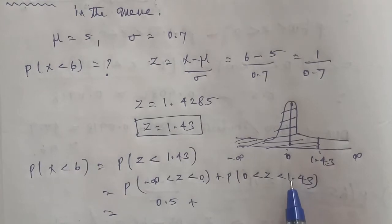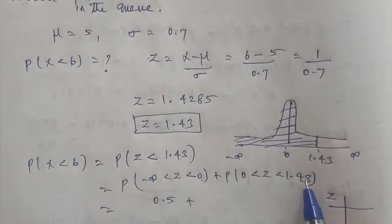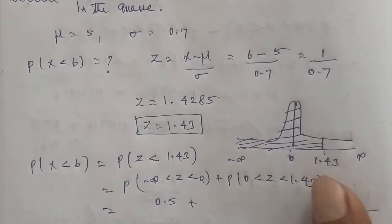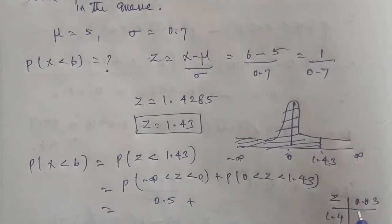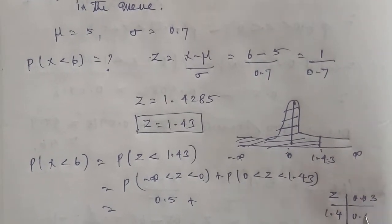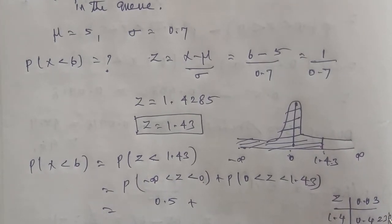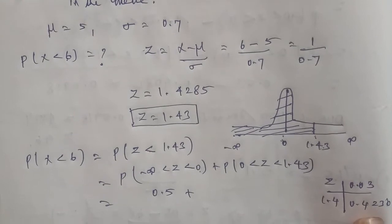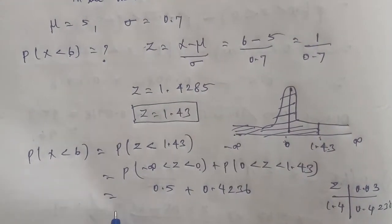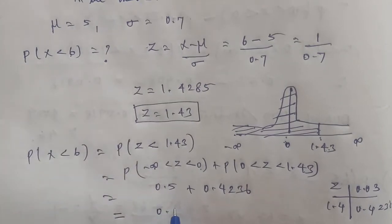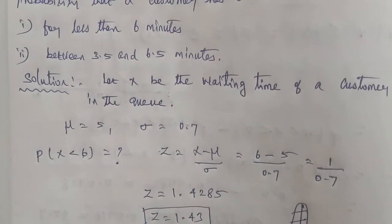The value from 0 to infinity is 0.5. Plus, from the 1.43 normal distribution table value, looking up Z = 1.4, we find the value is 0.4236. Adding these together: 0.5 + 0.4236 = 0.9236. This is the answer for part one, less than 6 minutes.